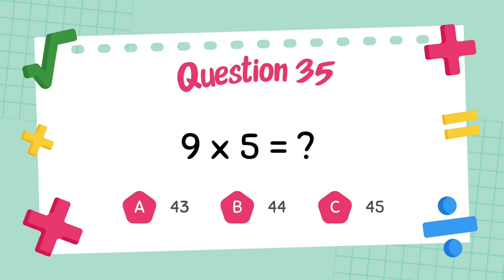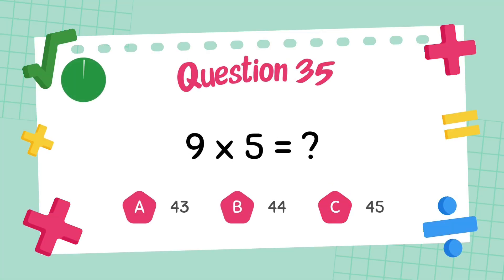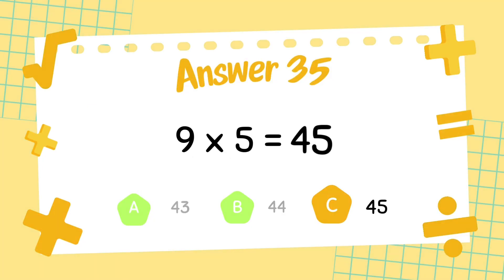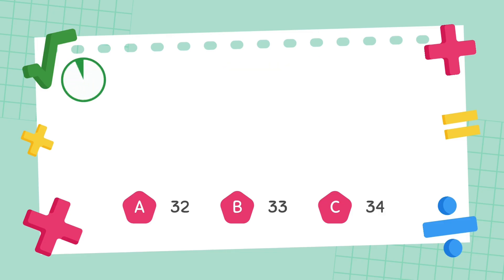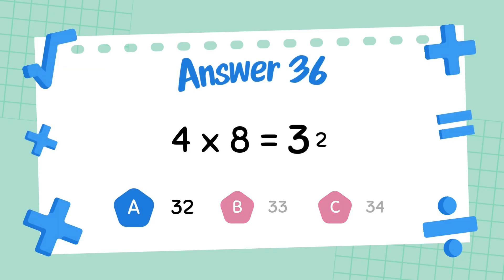What is 9 multiply 5? The answer is 45. What is 4 multiply 8? The answer is 32.